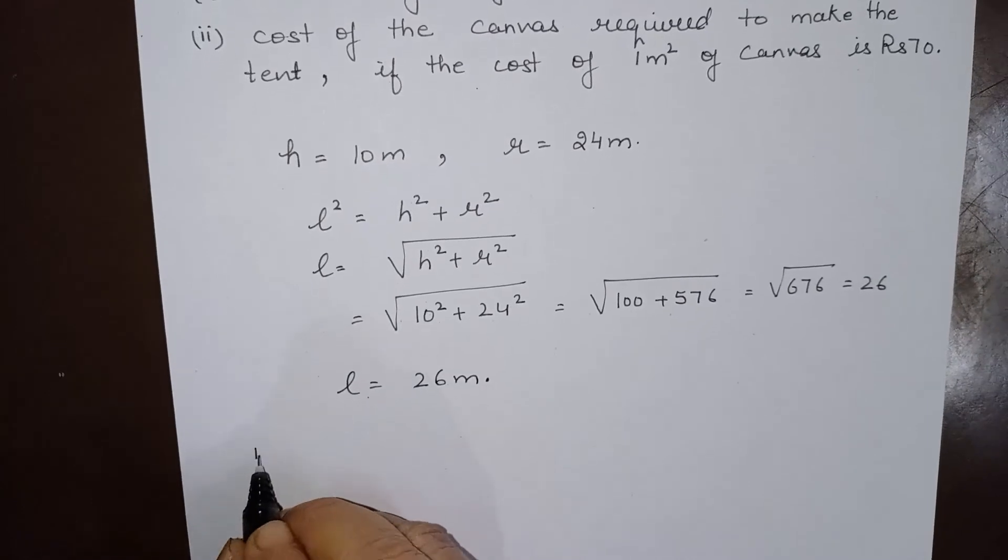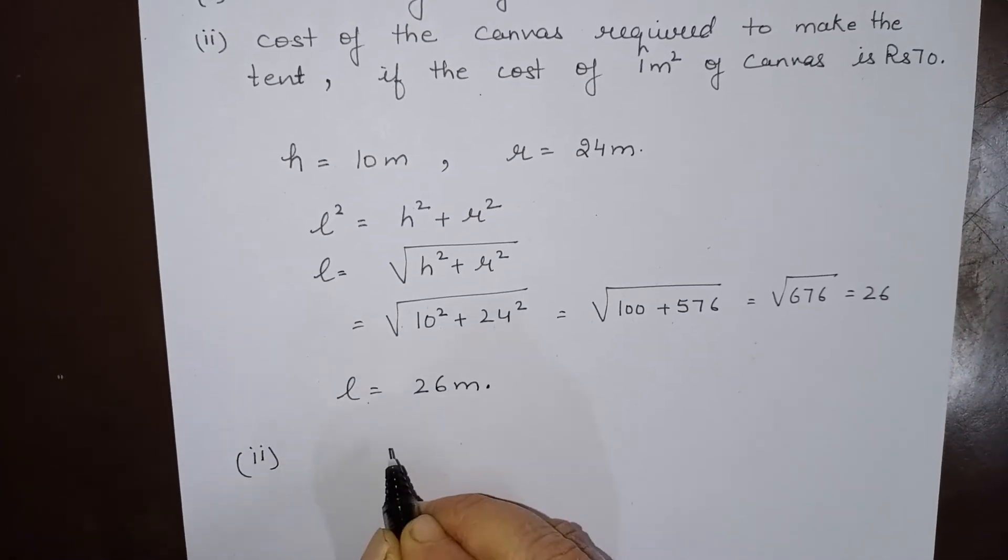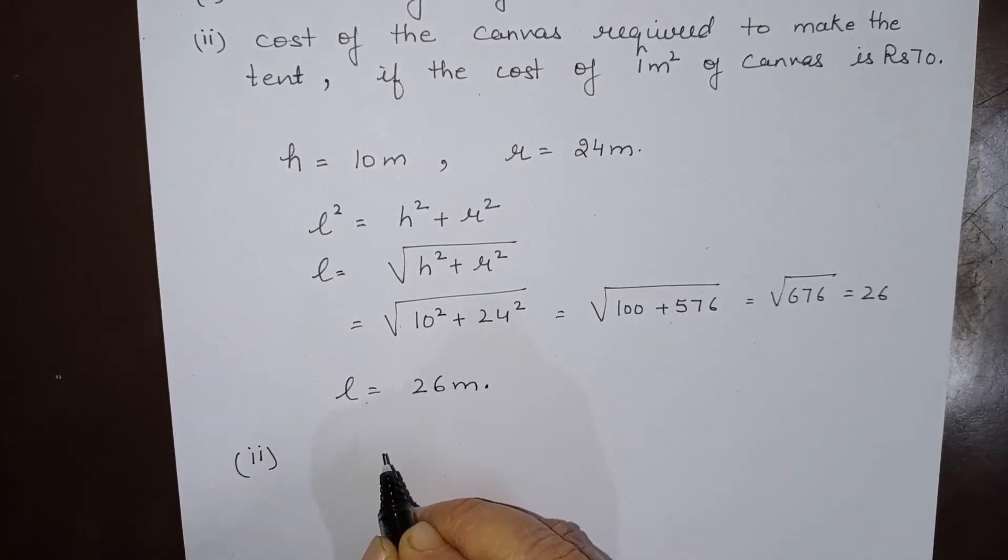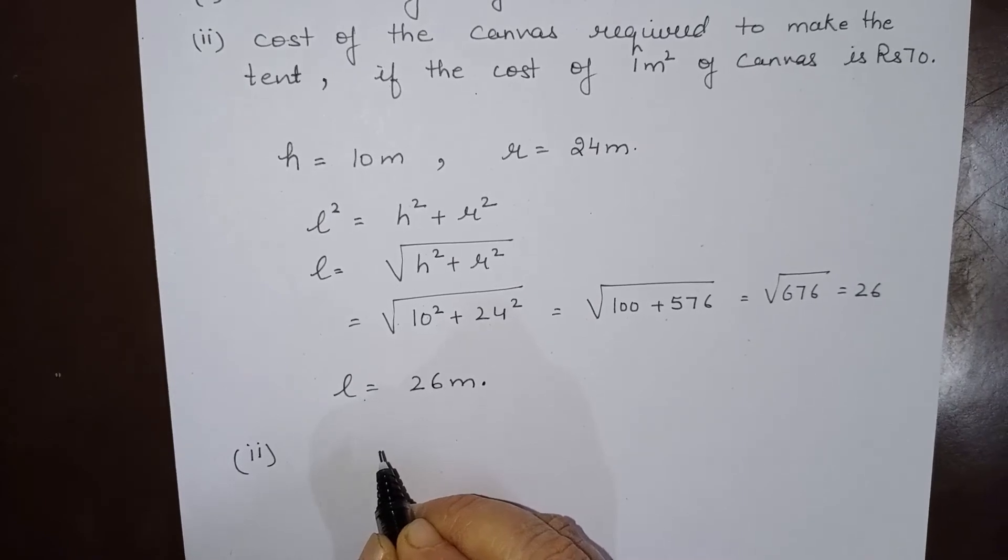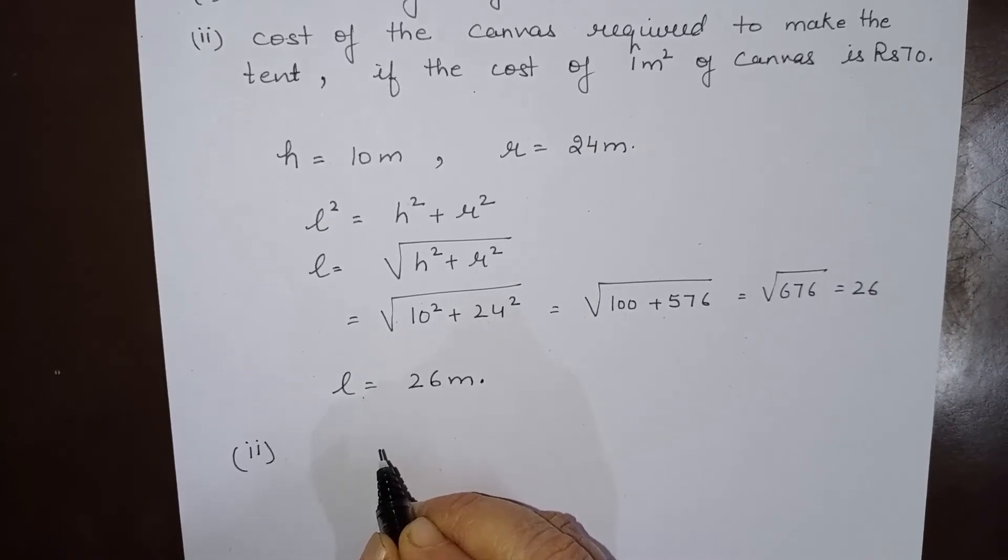height of the tent. Now in the second part we have to find the cost of the canvas used to make the tent if the cost of 1 meter square of canvas is rupees 70.